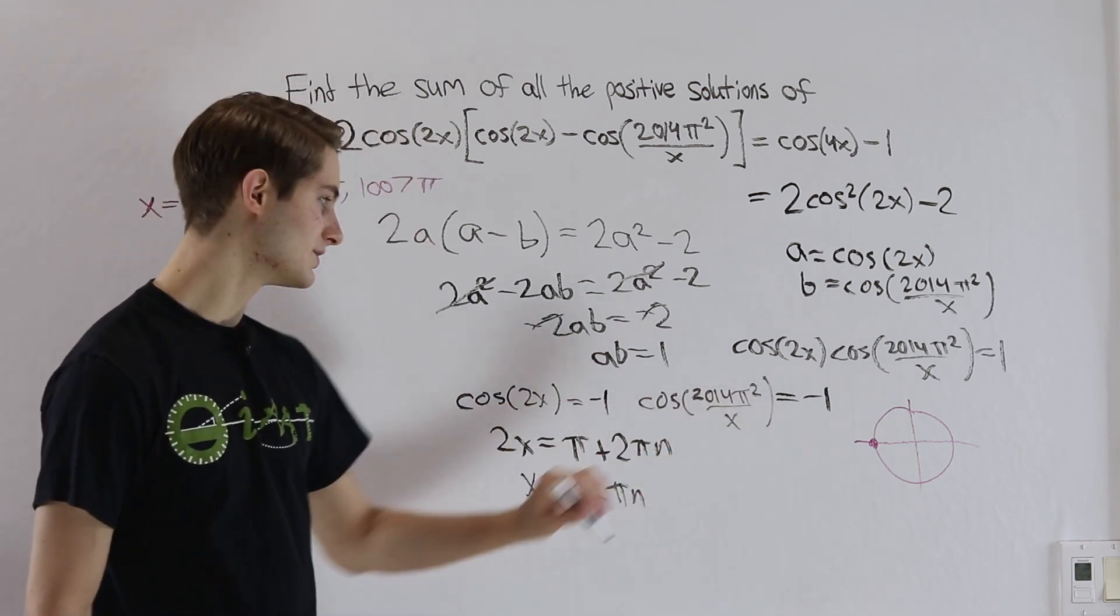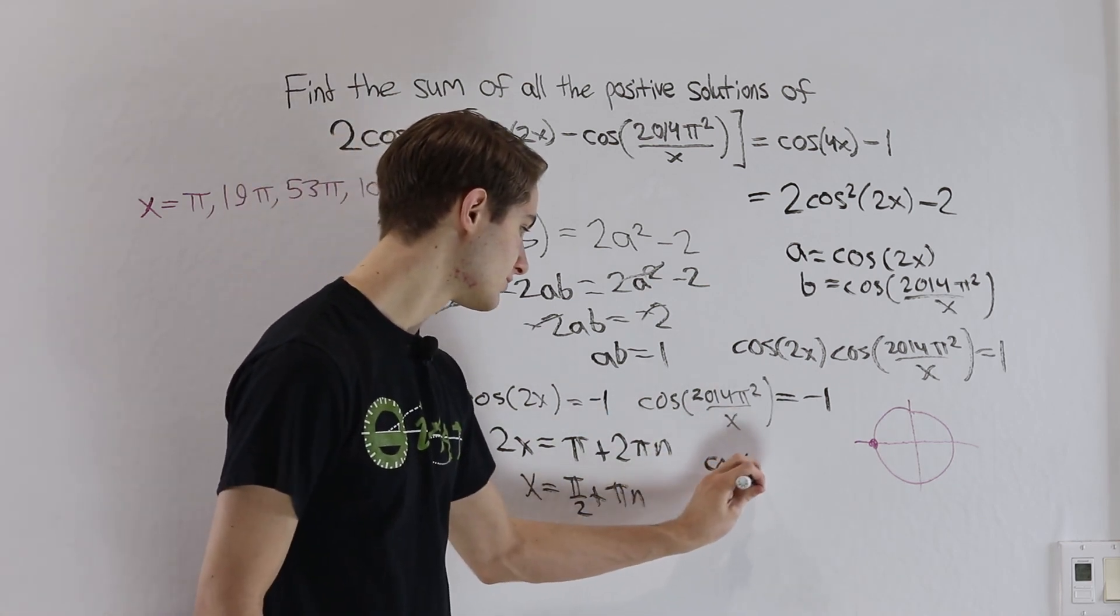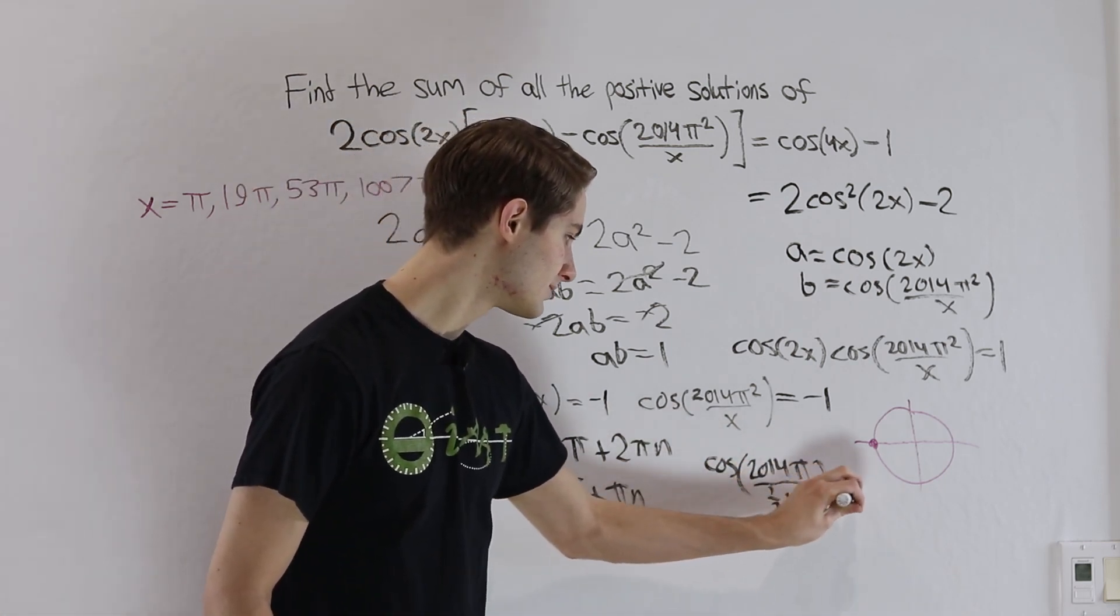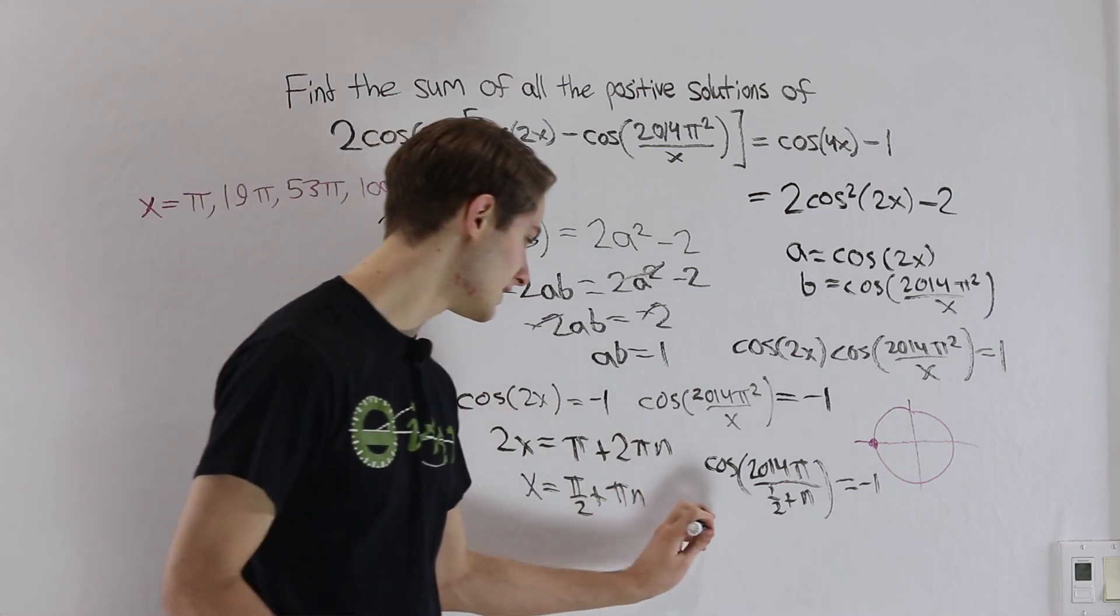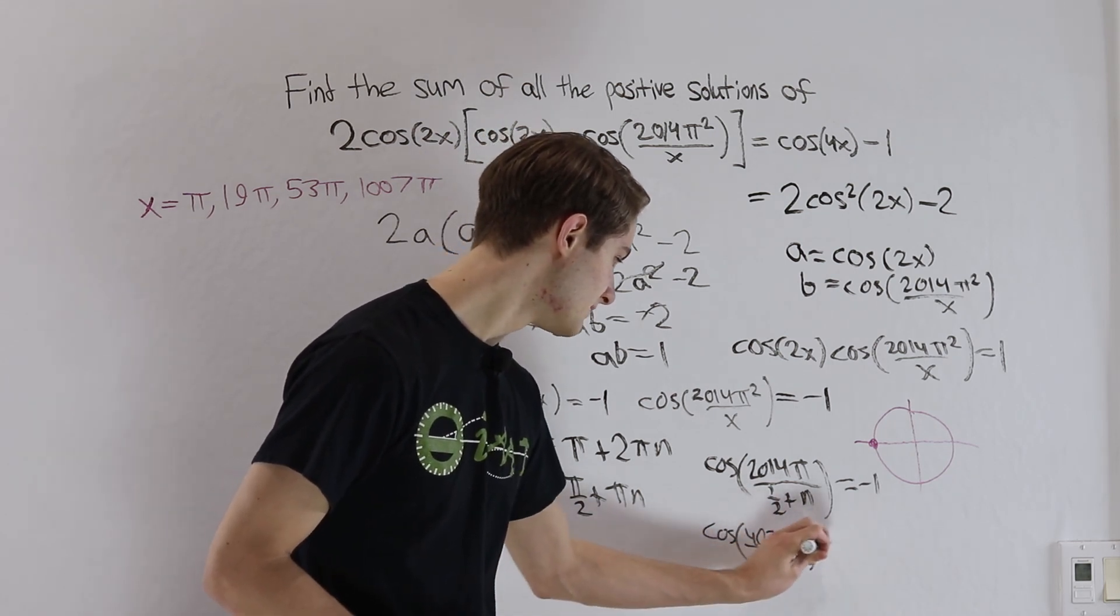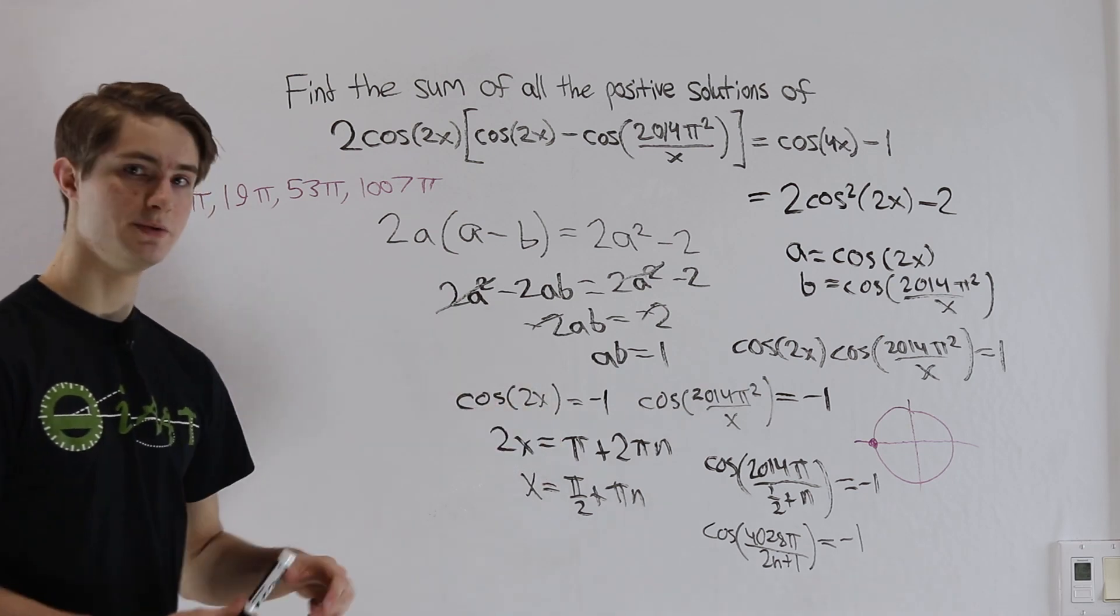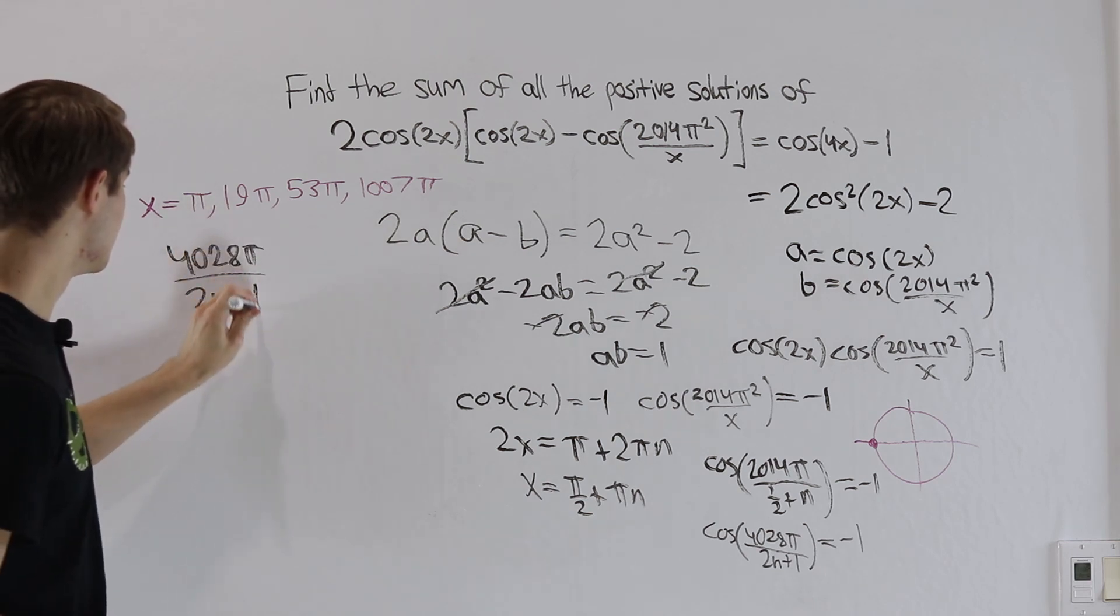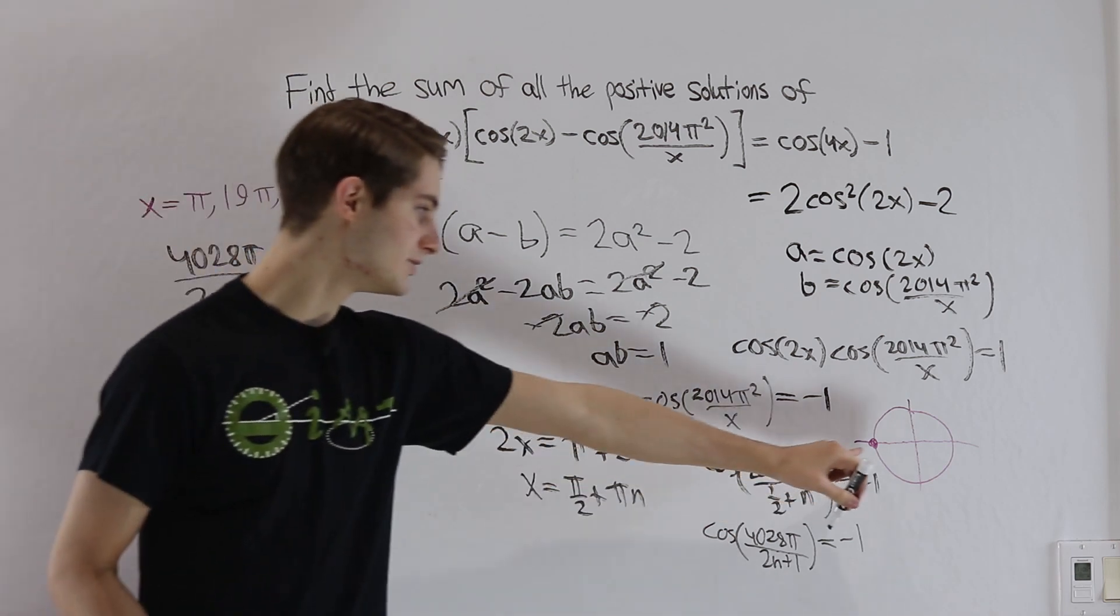So cosine of, notice again, π squared and π are going to cancel out here. So we're just going to have 2014π on the top divided by 1 half plus n. That's going to equal negative 1. Now to make this a little simpler, let's multiply by 2 on the top and bottom so we don't have this 1 half in the denominator. That's going to leave us with cosine of 4028π over 2n plus 1 is equal to negative 1. So now we can apply the same reasoning for this input here as we did for our first input of 2x. We know that this input, 4028π over 2n plus 1, that's going to have to equal π plus 2π times some integer k. That's the only way we'll get to negative 1.